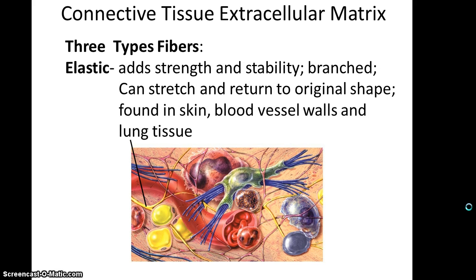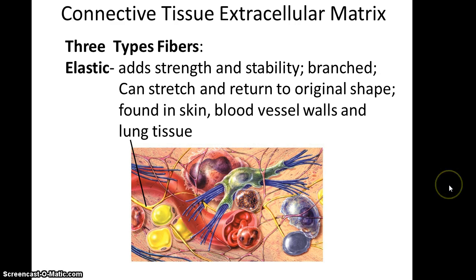Second, there are elastic fibers. These can also add to strength and stability. However, these fibers tend to be branched — the artist has colored them yellow, and you can see them branching out. Elastic fibers can stretch and return to their original shape, which is very useful in organs and structures that stretch a lot. They can be found in the skin, in blood vessel walls, and in lung tissue.